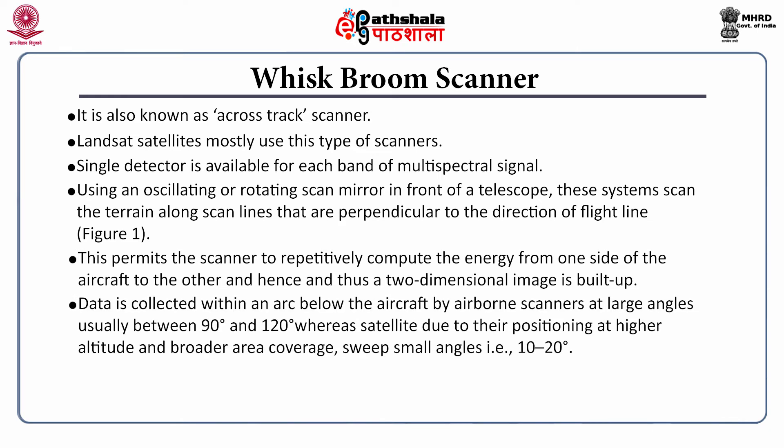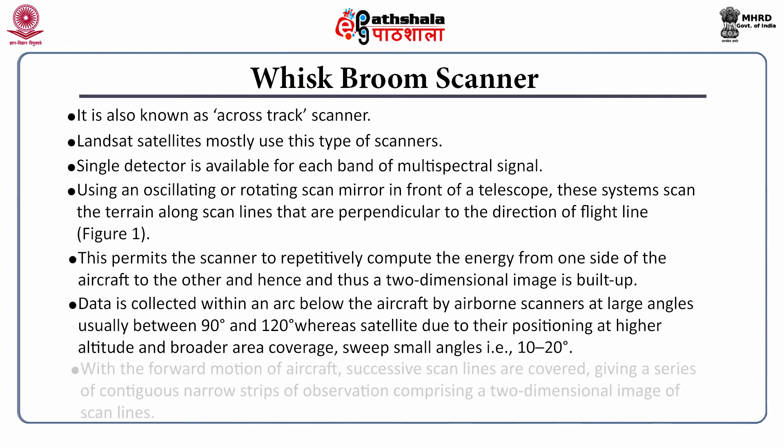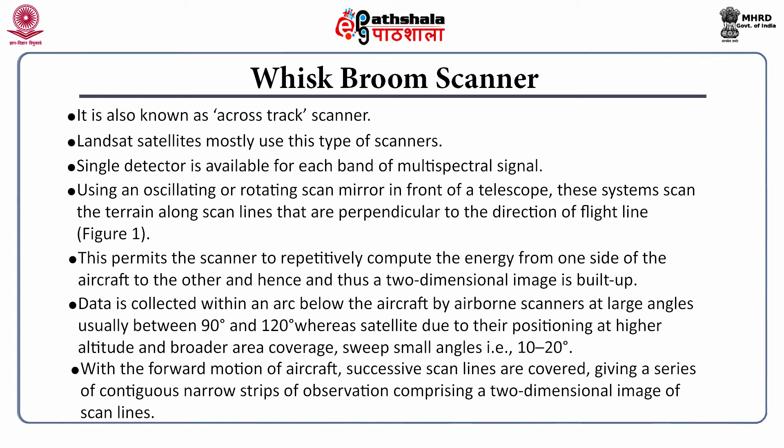Data is collected within an arc below the aircraft by airborne scanners at large angles, usually between 90 and 120 degrees, whereas satellites — due to their higher altitude and broader area coverage — sweep small angles of about 10 to 20 degrees. With the forward motion of the aircraft, successive scan lines are covered, giving a series of contiguous narrow strips of observation comprising a two-dimensional image of scan lines.